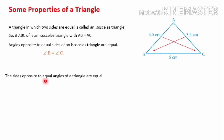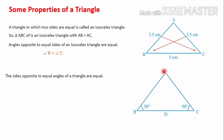The next property is the reverse statement: sides opposite to equal angles of a triangle are equal. In triangle ABC, angle B equals 50 degrees and angle C also equals 50 degrees, so angle B equals angle C. The side opposite to angle C is AB, and the side opposite to angle B is AC. Therefore AB and AC are equal.